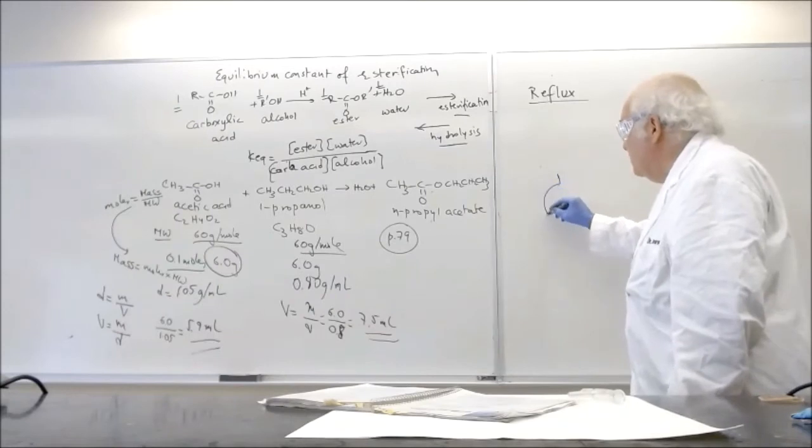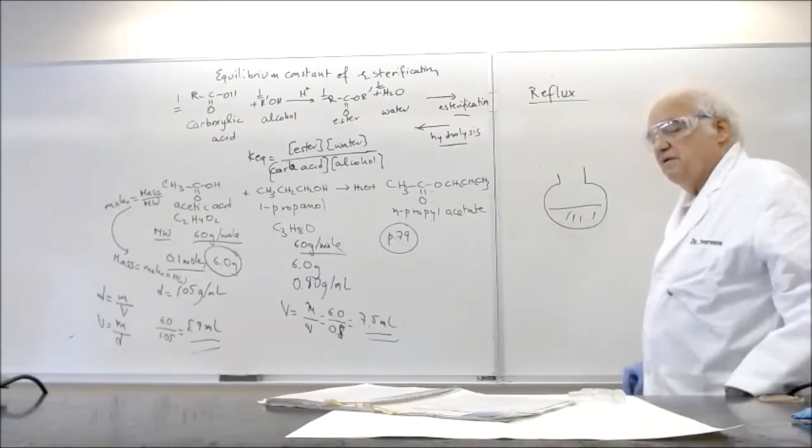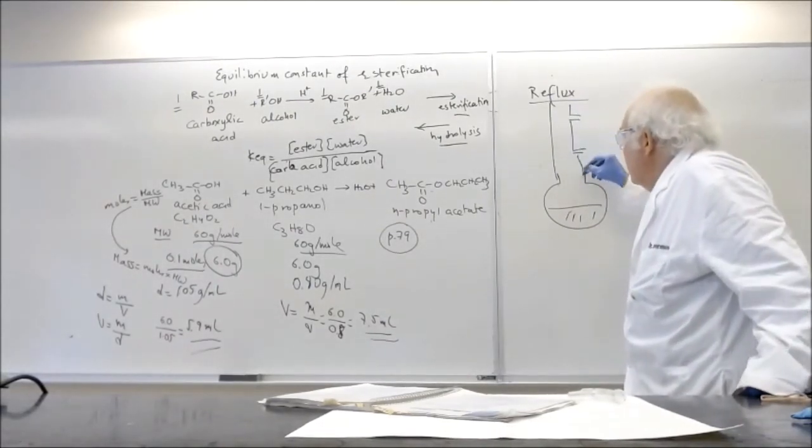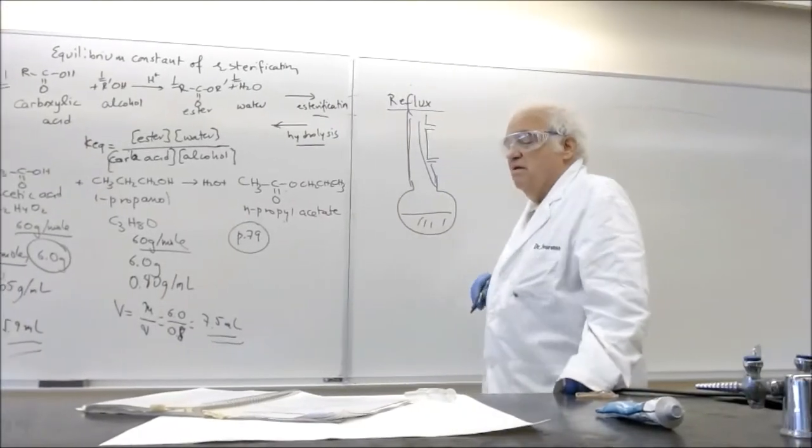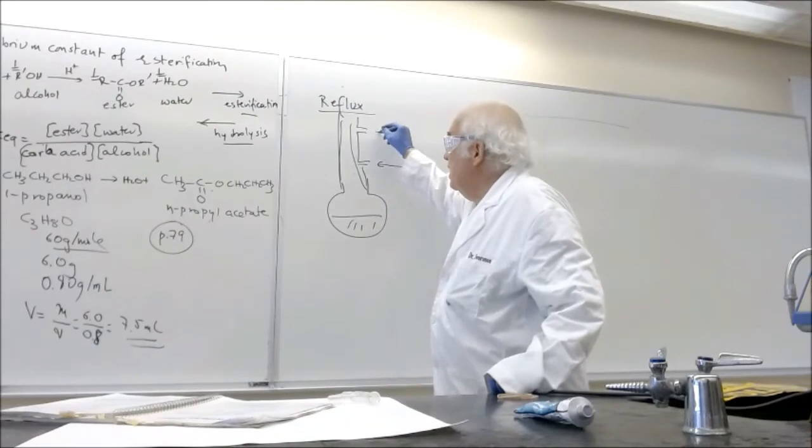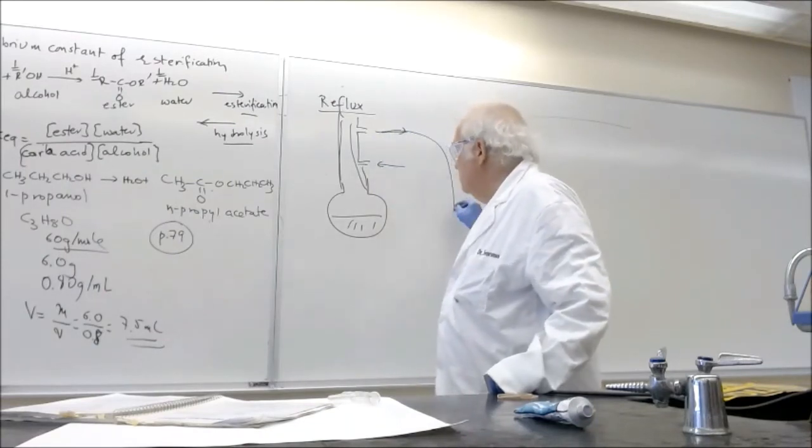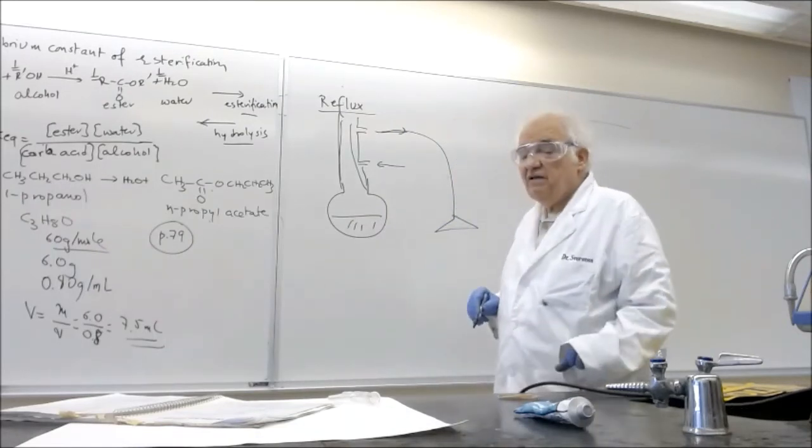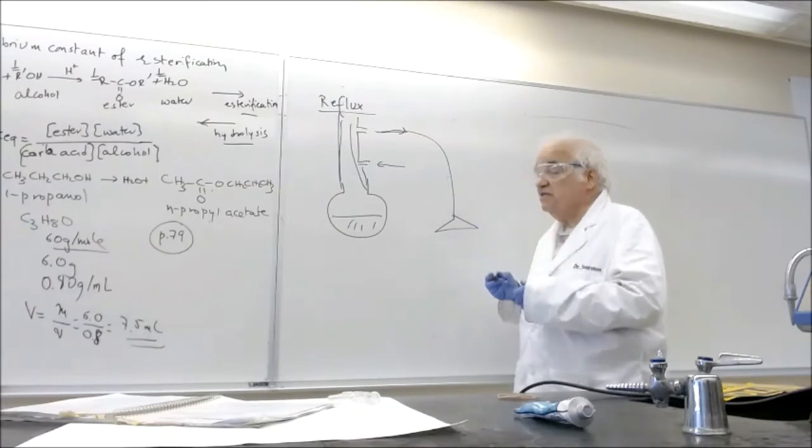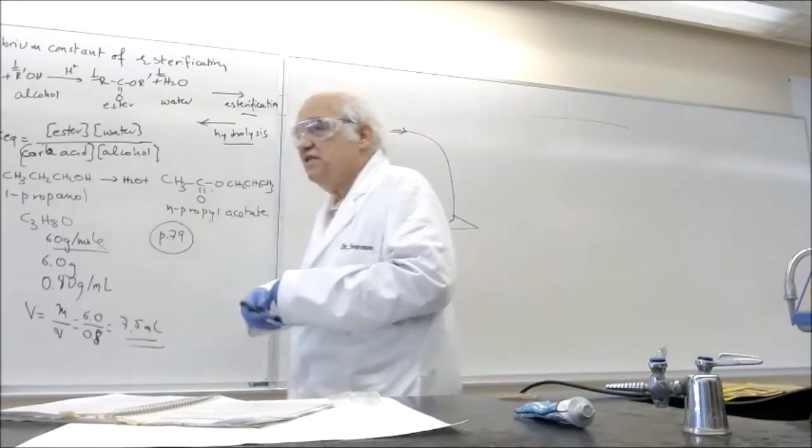So in the reflux, what we have is a round-bottom flask. We put your liquid in here. And what you do is you hook a condenser on top, water in from the bottom, out from the top. So remember now, when the water comes out, we always hook it up to a funnel. So this way the water, if the water pressure changes, the water doesn't splash all over. We always have to have boiling chips.